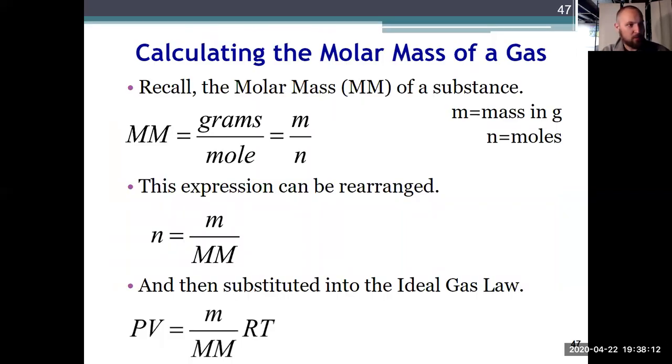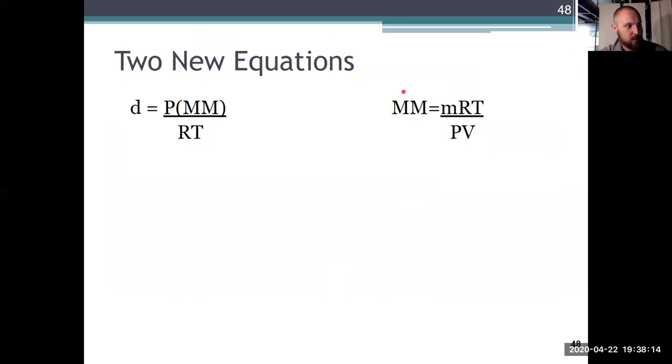One other manipulation here is explained in this slide. We already saw the first equation. I can also solve for the molar mass of a gas by multiplying by the mass in grams times R times T over PV. So two new equations. They're not new in the sense that we just derived them from PV equals nRT by playing around with units. But they do allow us to do some other things: calculate density, calculate molar mass.